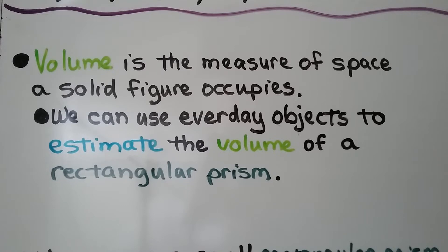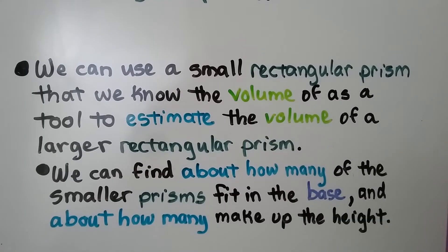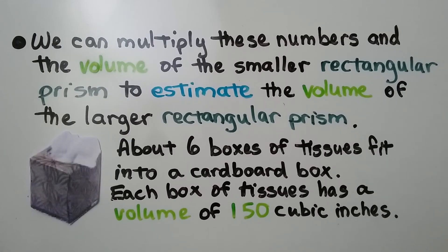We can use everyday objects to estimate the volume of a rectangular prism. We can use a small rectangular prism that we know the volume of as a tool to estimate the volume of a larger rectangular prism. We can find about how many of the smaller prisms fit in the base and about how many make up the height.